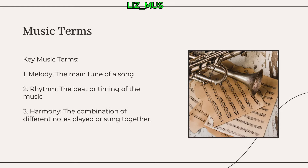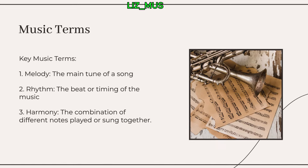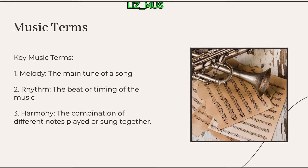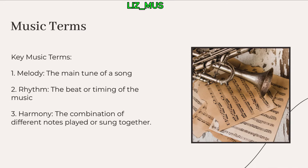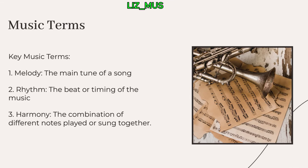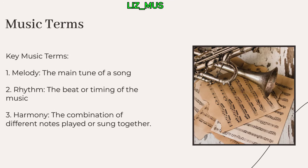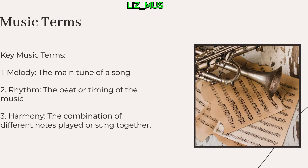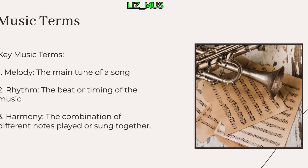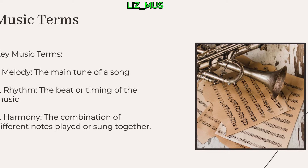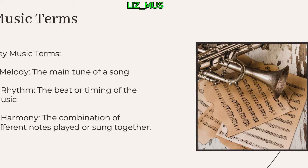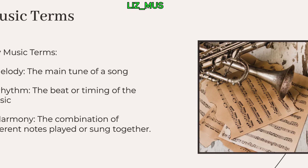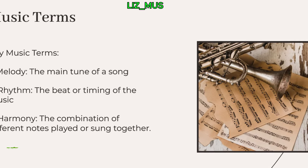To understand and talk about music, there are some important terms you will need to know. Number one: melody — it is the main tune of a song. Two: rhythm — it is the beat or timing of the music. And number three: harmony — it is the combination of different notes played or sung together.